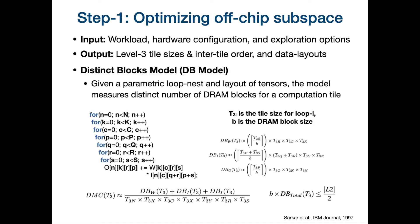The first step in our approach is optimizing the off-chip subspace. This step takes workload details, hardware configuration, and exploration options as input, and uses the classical Distinct Blocks model to estimate and optimize for off-chip data movement. Using this model, we output optimal mappings of the off-chip subspace: level 3 tile sizes, level 3 inter-tile order, and data layouts of tensors on DRAM. In the interest of time, I'm skipping the details of the DB model — we refer the audience to our arXiv paper on MARVEL.